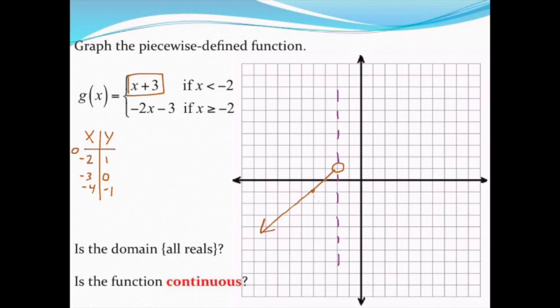Let me switch colors and we're going to move on to the other piece of this. The other piece of this function is this part of the line right here, negative 2x minus 3.